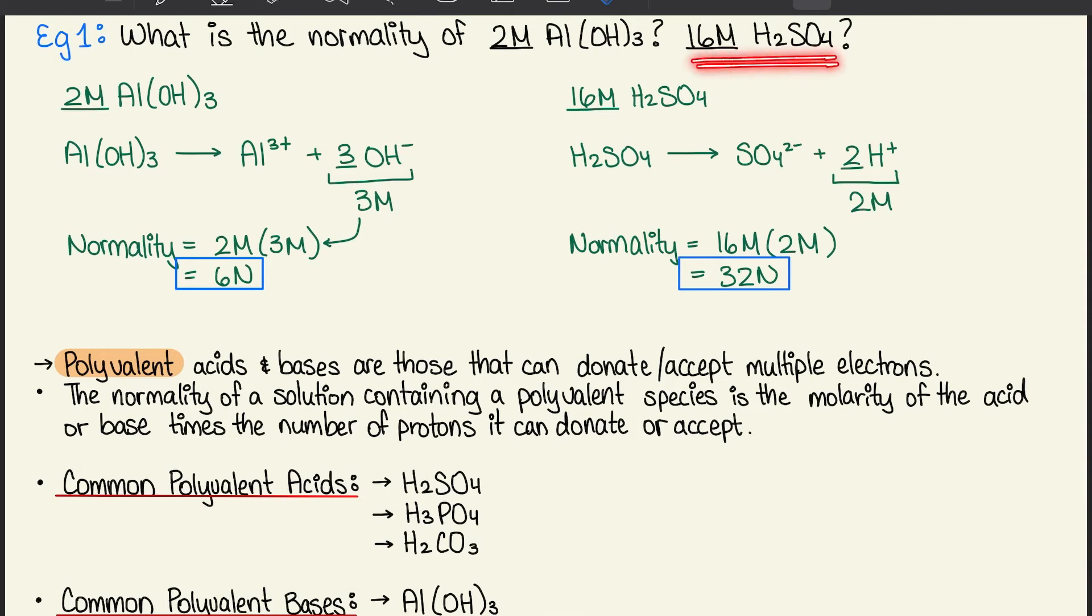For H2SO4, we dissociate that into 1 mole of SO42- plus 2 moles of H+ ions. Because there's 2 moles, we use the normality equation, plug in 16M times 2M, and we should get 32N. That's our final answer.